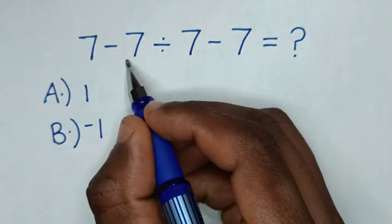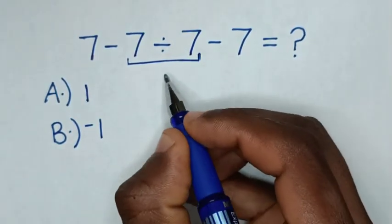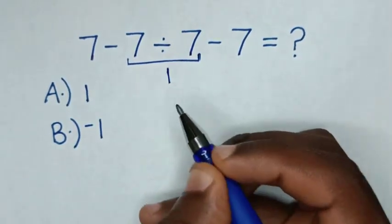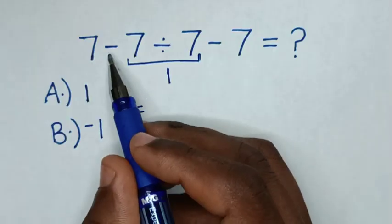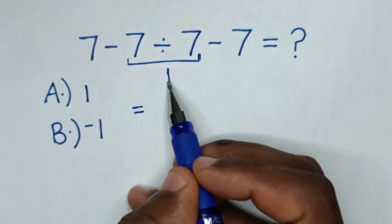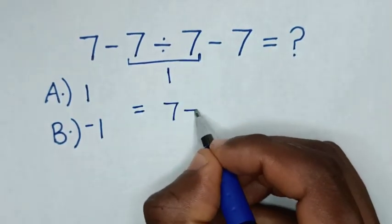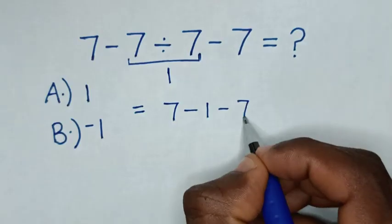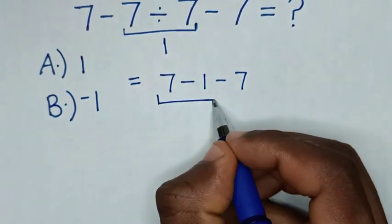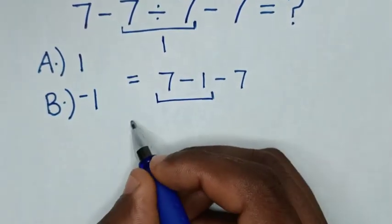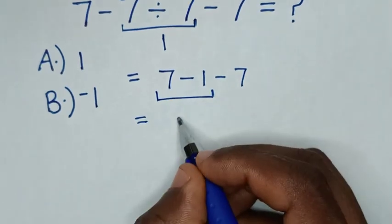First, we deal with the division: 7 divided by 7, which is 1. Then it will be equal to 7 minus 1 minus 7. Dealing with the first operation, 7 minus 1 is 6.